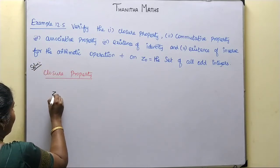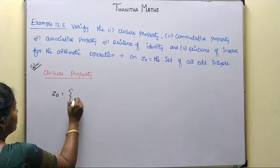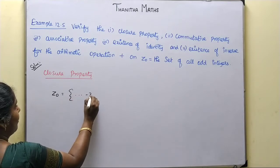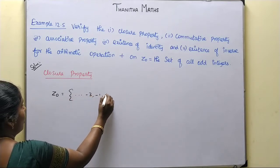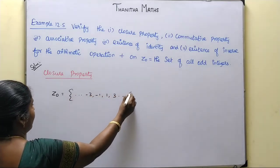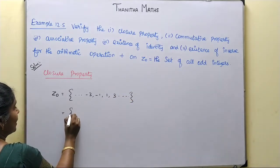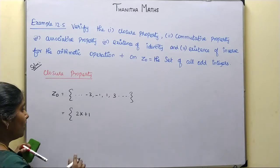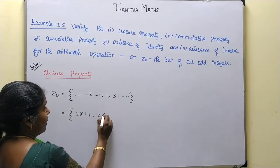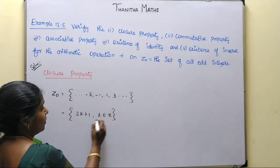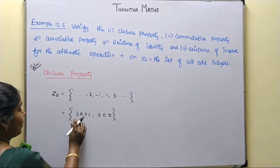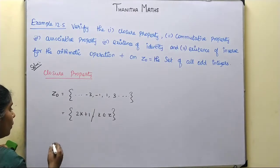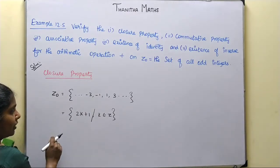We cannot proceed without defining the ZO set. ZO contains numbers: ..., minus 3, minus 1, 1, 3, ... and so on. In general, the elements are of the form 2k plus 1, where k belongs to Z (the set of all integers).